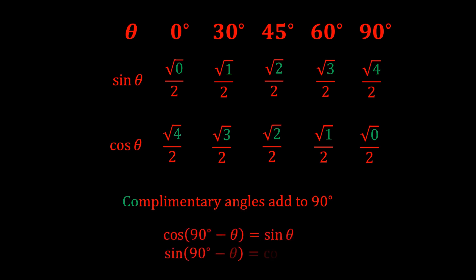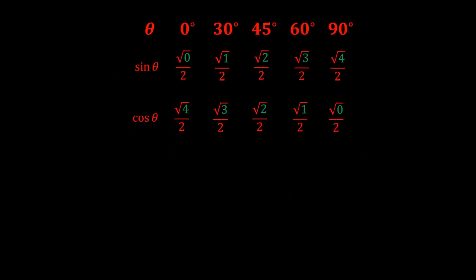So cos 90 minus theta is sine theta, and sine 90 minus theta is cos theta. That's pretty cool.